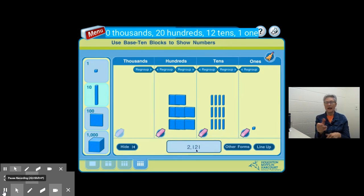So this again is another way that we could represent 2,121. It still has a value of 2,121. It is just not broken down in the place values that we have represented in the standard form.